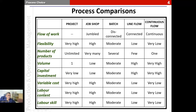Labor content specifically refers to the amount of manual effort involved in completing a task. In the case of projects, because of the level of customization, manual intervention is very high, whereas automation is much more possible in a continuous flow setup where the work is highly repetitive. Similarly, because of the level of customization, the labor skill — the level of skill of the people running the operation — also has to be high in the case of a project, compared to continuous flow where it can be relatively very low. These dimensions show how the different process types vary.